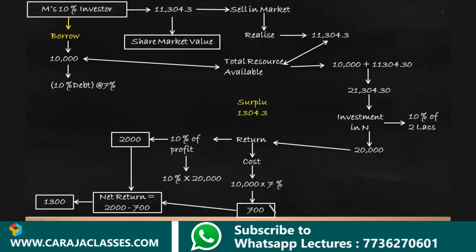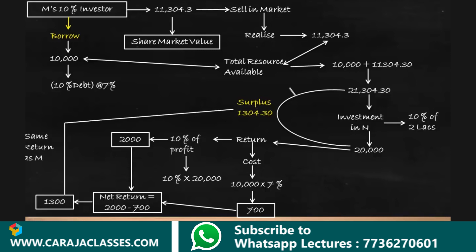The net return from investing in N is 2,000 minus 700 equals 1,300 — the same return the investor earned in firm M. Additionally, the investor has a surplus of 21,304 minus 20,000 equals 1,304. By moving from M to N, the investor's position has improved: they earn the same return and also have a surplus of 1,304. This demonstrates how the arbitrage process works, showing that the value of the firm is not affected by its debt and equity composition.